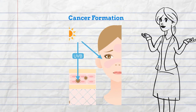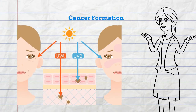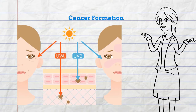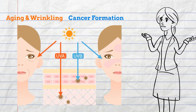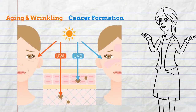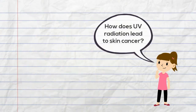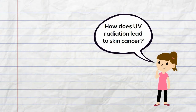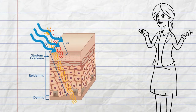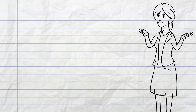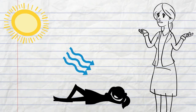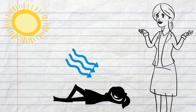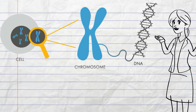UVA is a weaker carcinogen than UVB and has been shown to predominantly cause aging and wrinkling of the skin, and on occasion, cancer. So how does UV radiation lead to skin cancer? UV radiation penetrates the skin, and over time, the continuous exposure to the sun can damage the DNA in our skin cells.